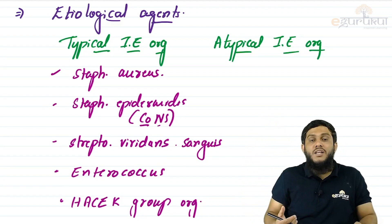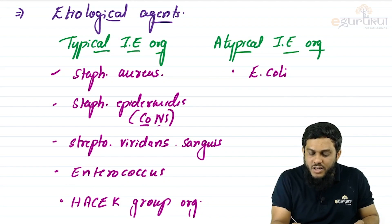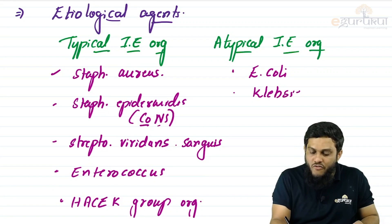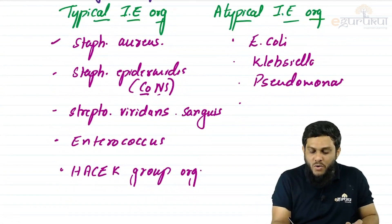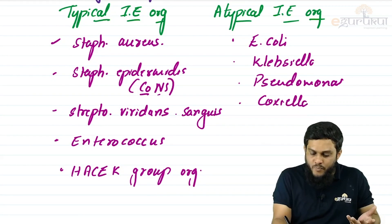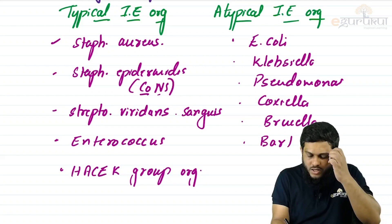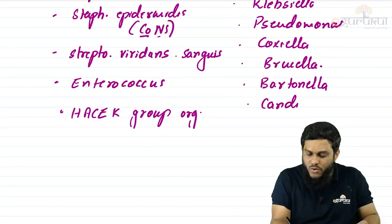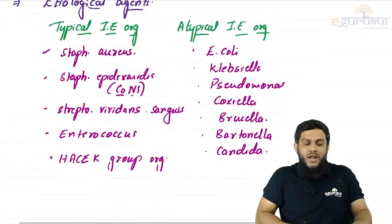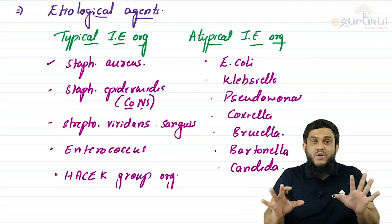All organisms other than the typical ones are grouped under atypical infective endocarditis organisms. Important atypical organisms include Enterobacteriaceae such as E. coli and Klebsiella, non-fermenters such as Pseudomonas, and fastidious organisms including Coxiella, Brucella, and Bartonella. Fungi like Candida can also cause infective endocarditis. These are the important organisms from the large list of atypical agents.